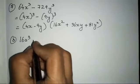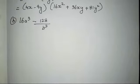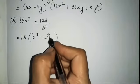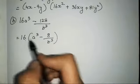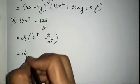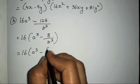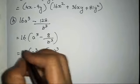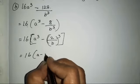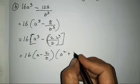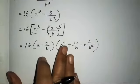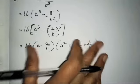The eighth one is 16a cube minus 128 upon b cube. We take 16 as common — since 16 into 8 is 128 — giving 16 times a cube minus 8 upon b cube. Here 2's cube is 8, so we take it into a bracket to avoid confusion, giving 16 times a minus 2 upon b times a square plus 2a upon b plus 4 upon b square. This is plain expansion of the formula — no cancellation needed.